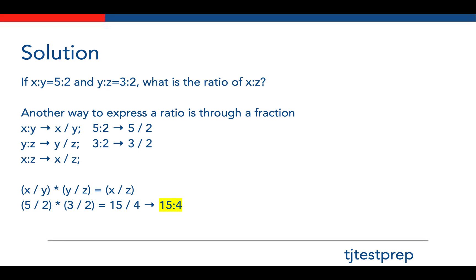All you have to do then is multiply 5 divided by 2, which is the ratio of x to y, times 3 divided by 2, which is the ratio of y to z. You get 15 divided by 4, and in ratio form that's expressed as 15 to 4.